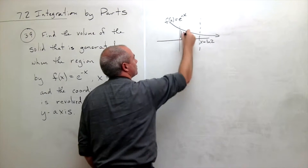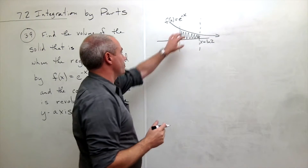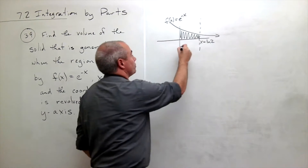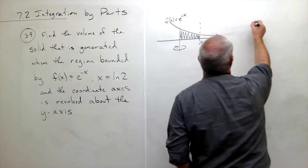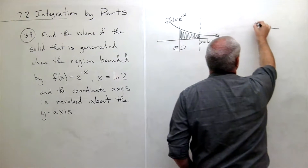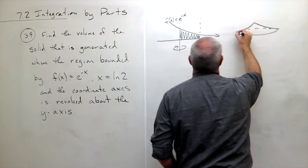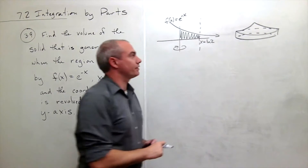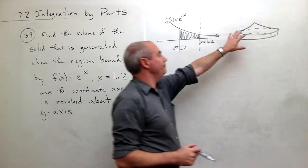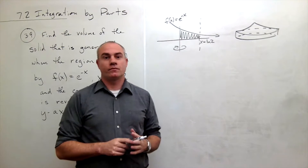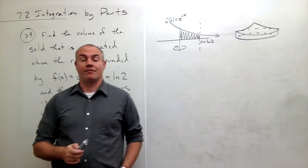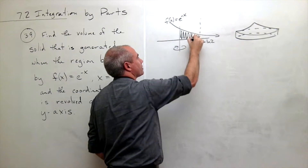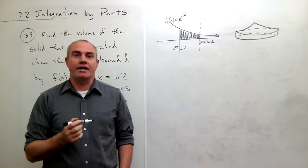We can see what is trapped between all of those is this region. Then we revolve that region around the y-axis. If I revolve around the y-axis, the shape I get looks something like this. Now I want to make cuts that look like this, and those cuts are cutting up the x-axis.